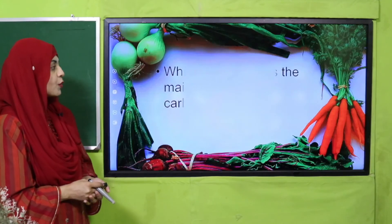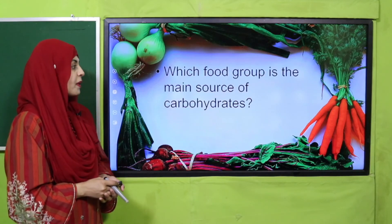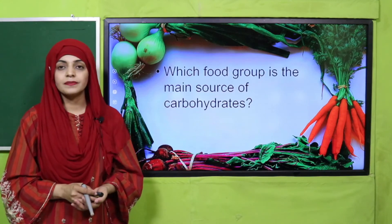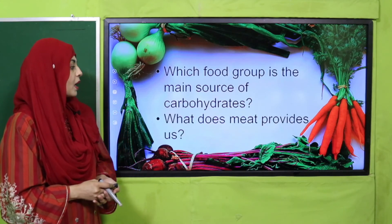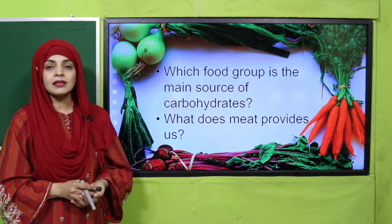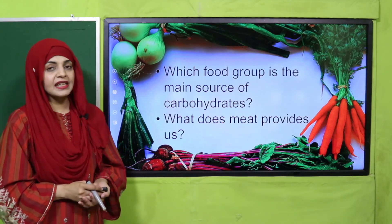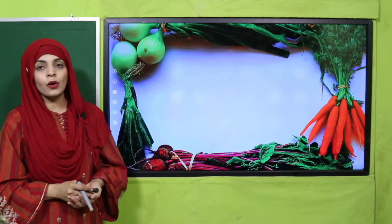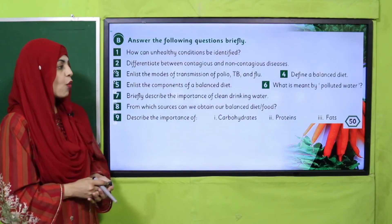Now we move forward to evaluation. Which food group is the main source of carbohydrates? Grains — very good! And what does meat provide us? Proteins — excellent!